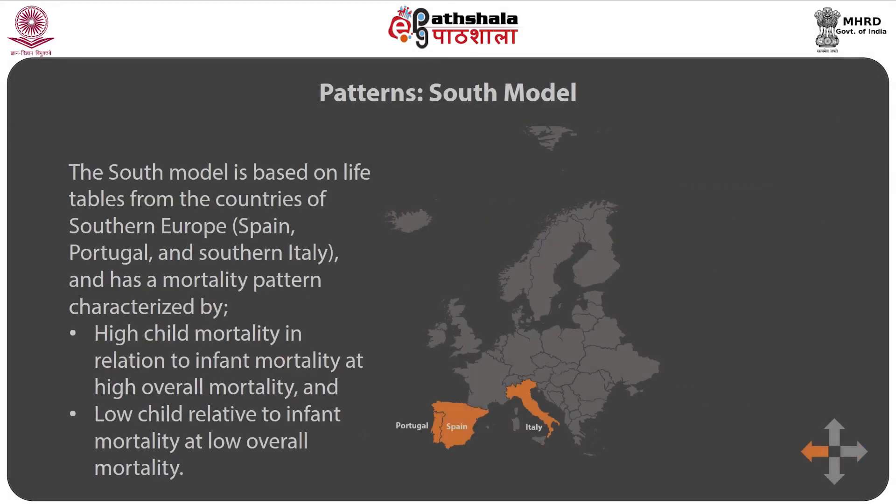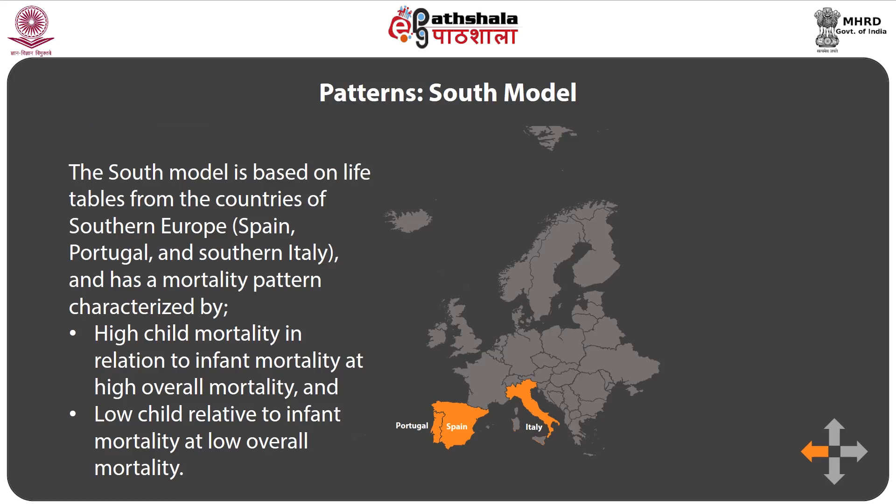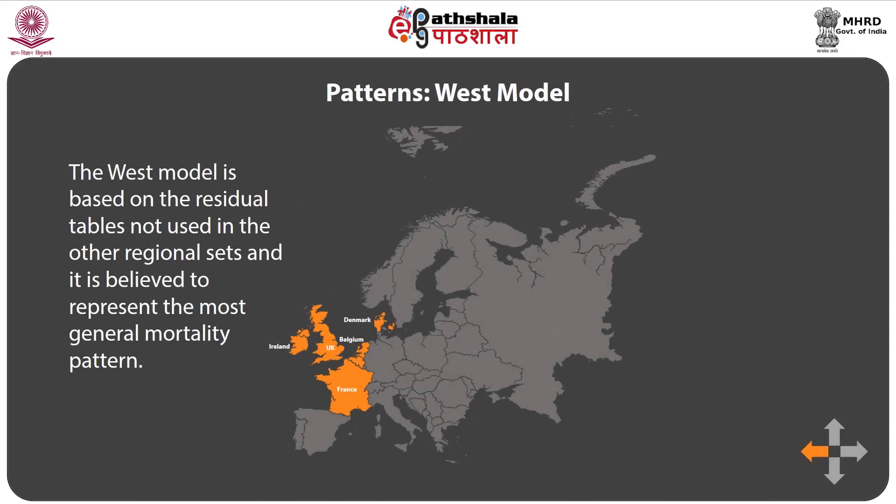The South model is based on life tables from Southern European countries, Portugal and Southern Italy, and has a mortality pattern characterized by high child mortality in relation to infant mortality at high overall mortality, and low child mortality relative to infant mortality at low overall mortality. Countries include Spain, Portugal, Italy, Southern Italy, and regions of Sicily, covering a period from 1876 to 1952. The West model is based on the residual tables not used in the other regional sets — countries of Western Europe and most non-European populations — and is believed to represent the most general mortality pattern.